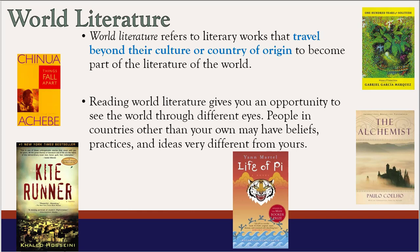We looked at examples of world literature books. Chinua Achebe's Things Fall Apart takes place in an African nation. Gabriel García Márquez takes place in Central America. We'll be reading The Alchemist in our next unit, which takes place in the Middle East. Life of Pi is based on a story from India, and Kite Runner takes place in Afghanistan. These are examples of world literature and cultures you can learn about.